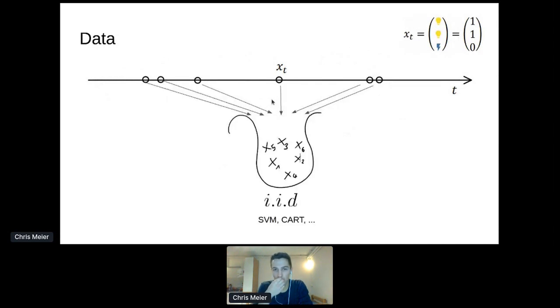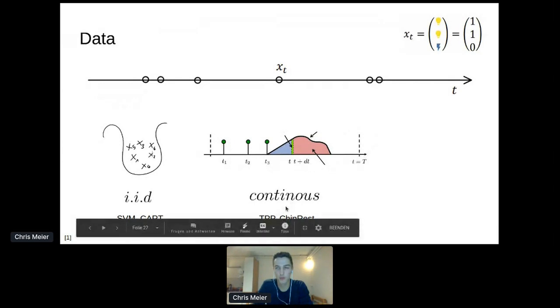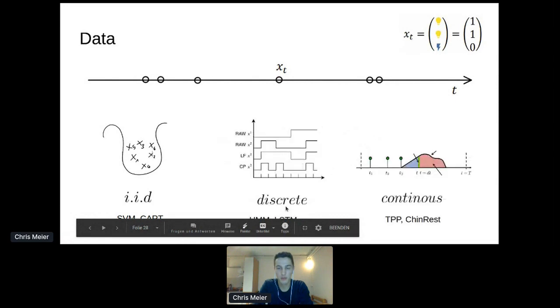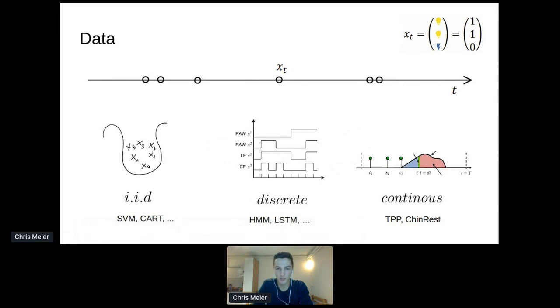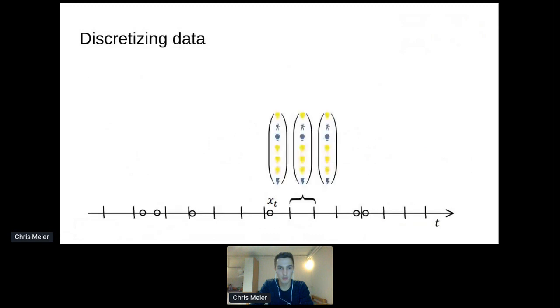We could move forward and assume that all these data points are independent, and there are models that tend to this data pretty well like support vector machines or random forests. Then there are other models that assume the data as it is, mainly continuous temporal points like the temporal point process or the Chinese restaurant process. I chose to discretize time and use models that perform inference on such basis. So how do you discretize time? You divide your event stream into equidistant time slices.